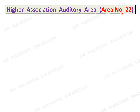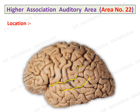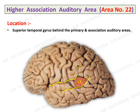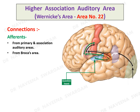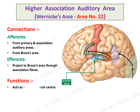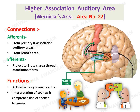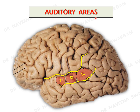Higher association auditory area, area 22, also known as Wernicke's area: here is the posterior ramus of the lateral sulcus and the superior temporal sulcus. The area occupies the most posterior part of the superior temporal gyrus behind the primary and association auditory areas. It receives afferents from the primary and association auditory areas and also from Broca's area. Afferents are projected to Broca's area through association fibers, which is why Wernicke's area acts as the sensory speech center — it is concerned with interpretation of sounds and comprehension of spoken language.